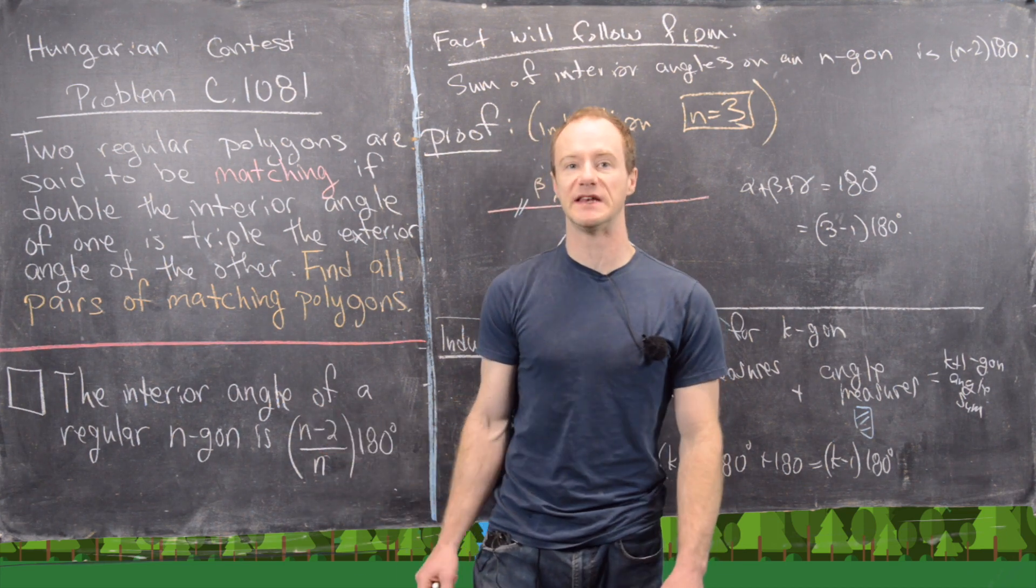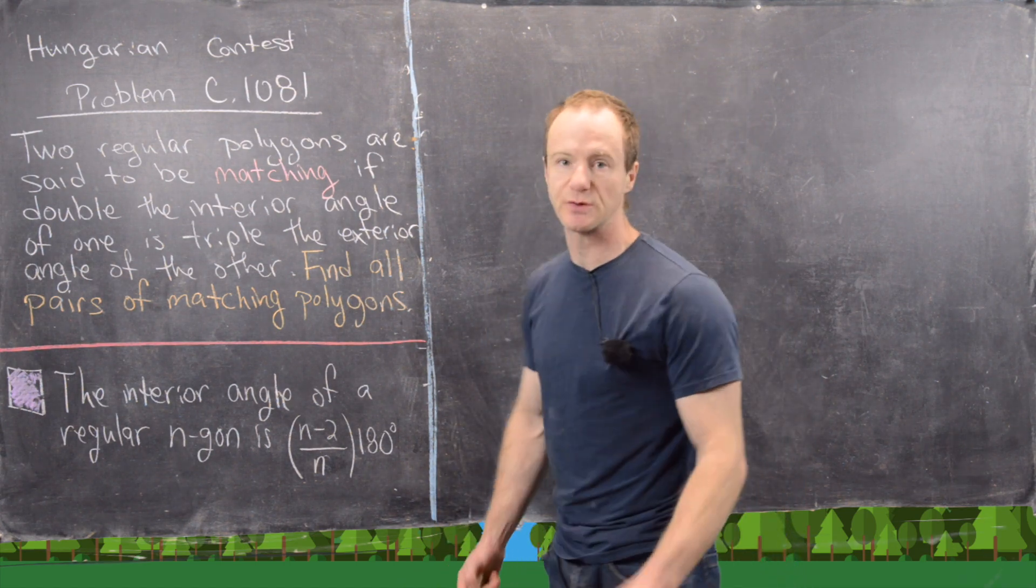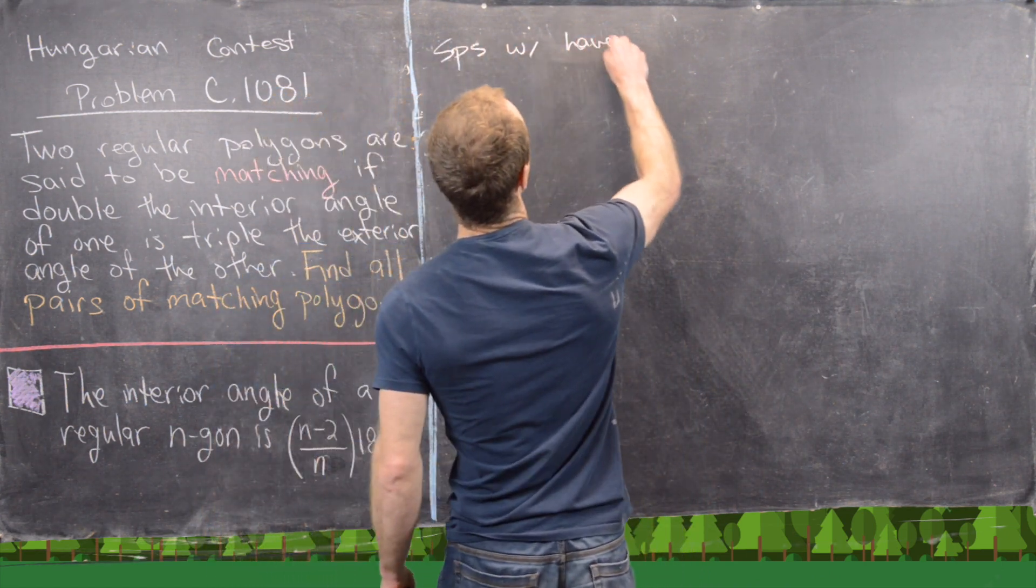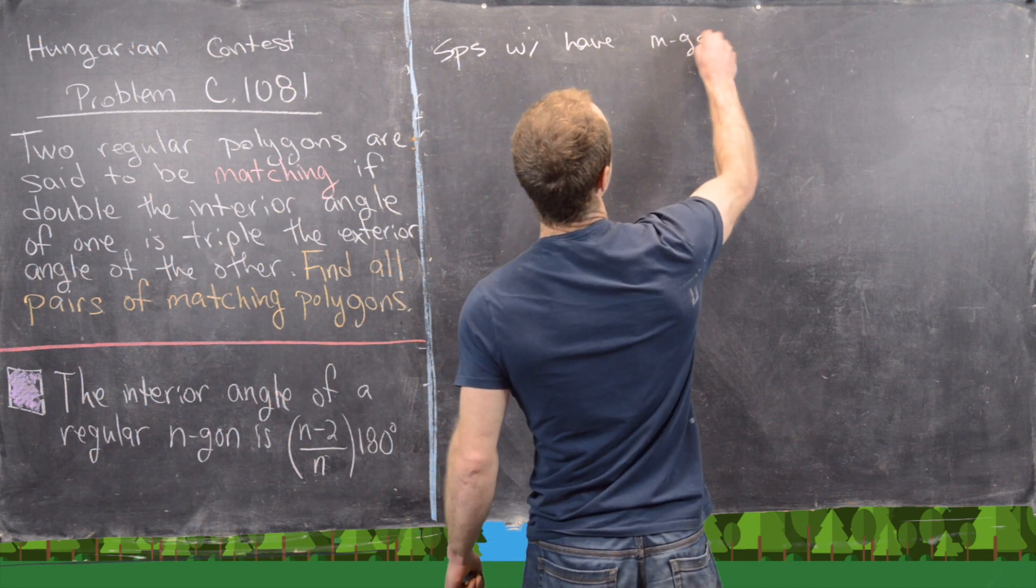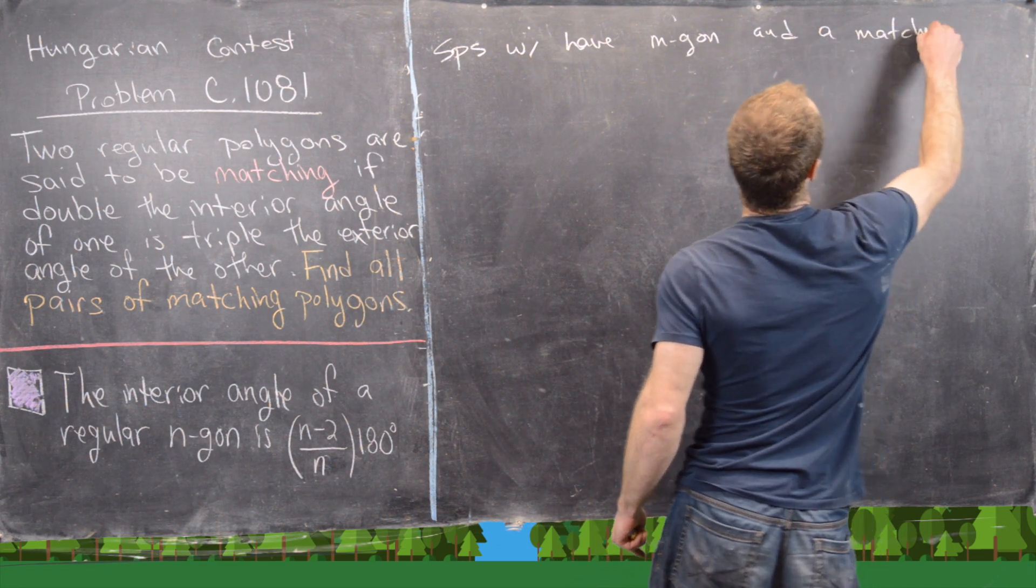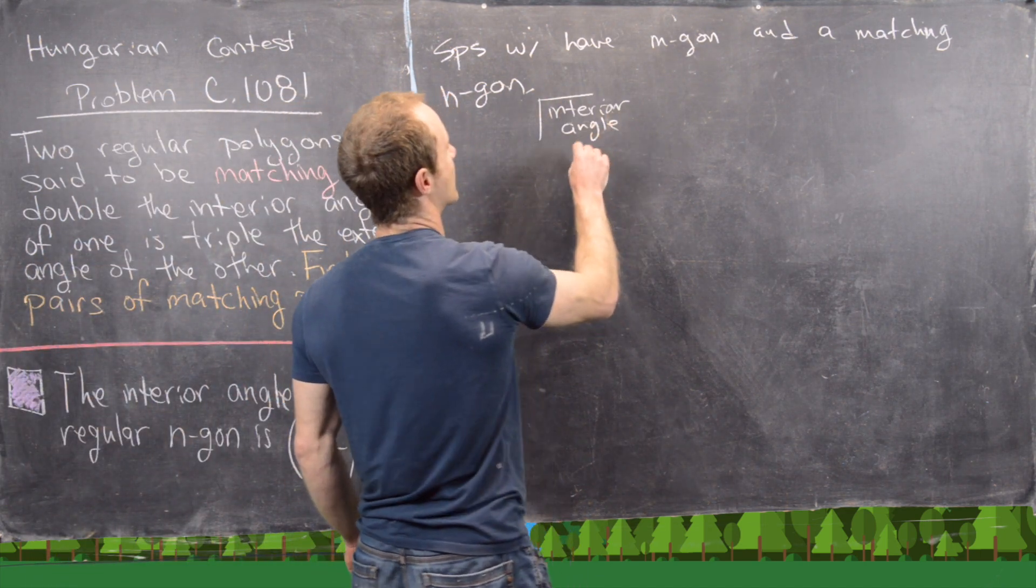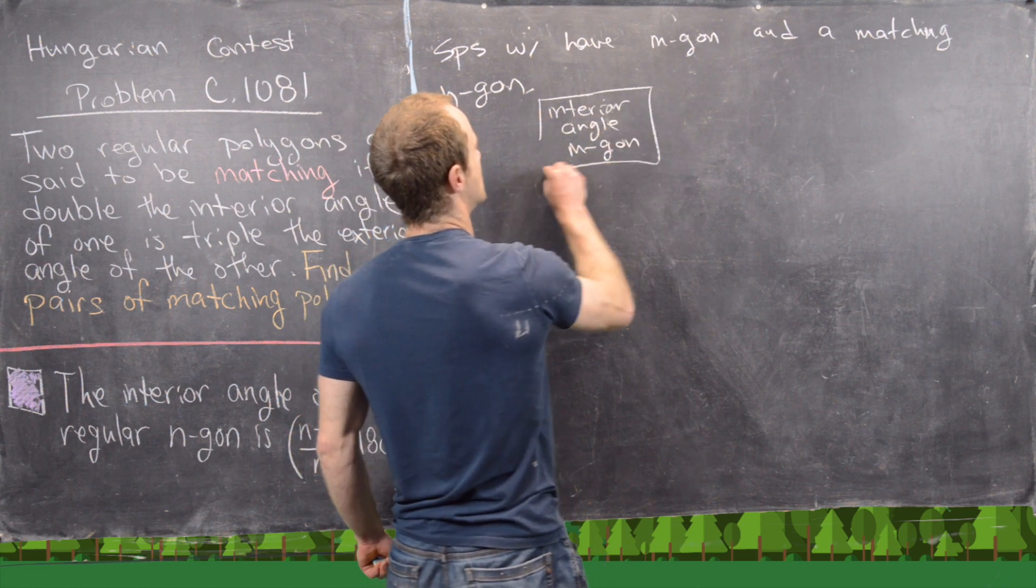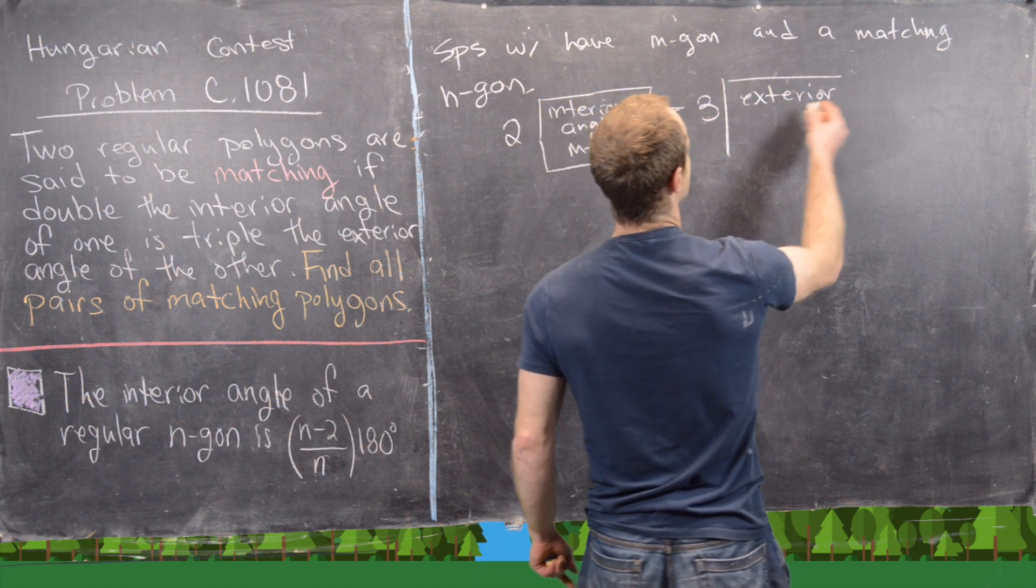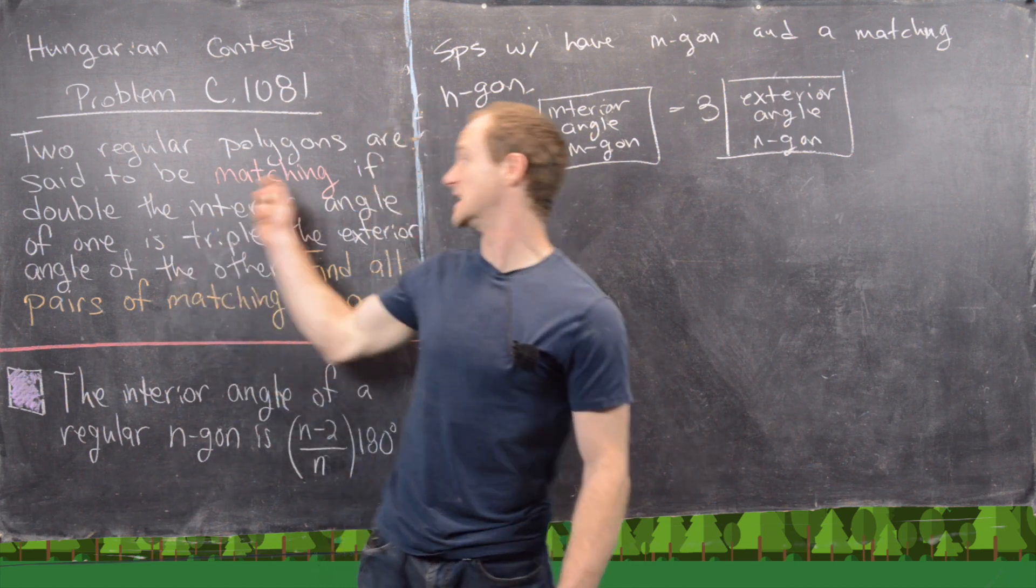So now we've proved the only fact that we need in order to do this, and now we're ready to get going on the solution. So let's suppose we have an m-gon and an n-gon that are matching. So what that tells us is that the interior angle of our m-gon times 2 is equal to 3 times the exterior angle of our n-gon.